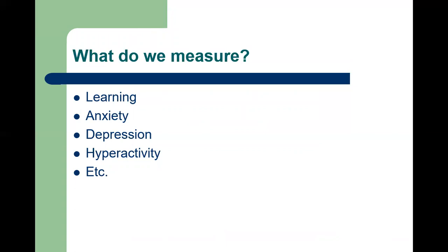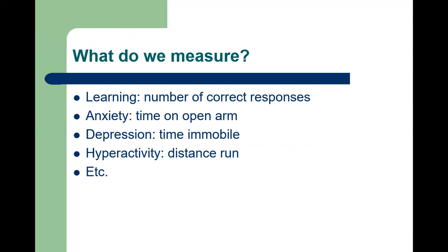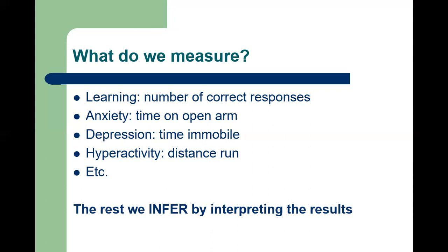What are the kinds of things we measure? We are interested in learning, anxiety, depression, hyperactivity — but that is not what we actually measure. What we measure is, for instance, the number of correct responses for learning, or time on an open arm for anxiety. Learning and anxiety are inferences we make by interpreting the results. An animal may be feeling unwell that day and performing poorly — that doesn't mean it can't learn.